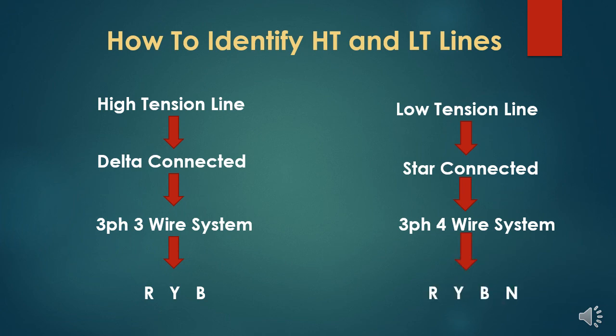I will tell you one more way to know which line is in high-voltage category and which line is in low-voltage category from physical appearance. If the transmission line is in high-voltage category, with voltage above 33 kV, then the line will be delta-connected. This means there is no neutral requirement, and the fourth wire is not used. So if between two towers there are only three lines — only R, Y, and B — with only three phases used and no fourth line, then that line is a high-voltage line.